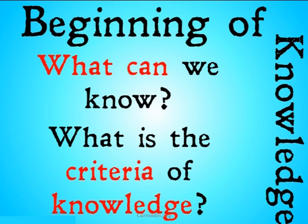Basically, if we answer the question 'what can we know?' first, then we're going to be arbitrarily deciding what we do know and what we don't know without really a good criterion for separating them. But if we answer the other question — 'what is the criteria of knowledge?' first — then we're going to be coming up with an arbitrary criteria for separating knowledge without having specific examples of either knowledge or not knowledge.